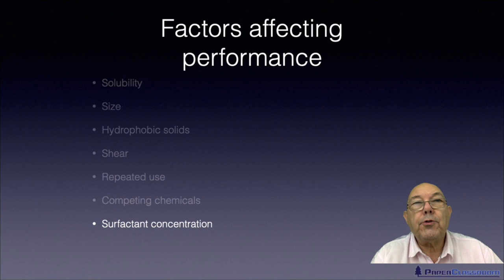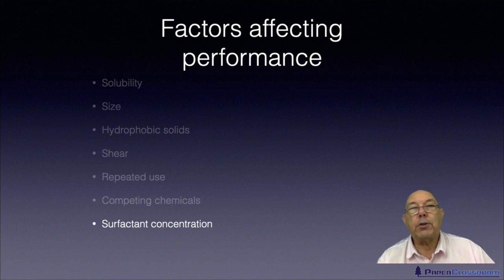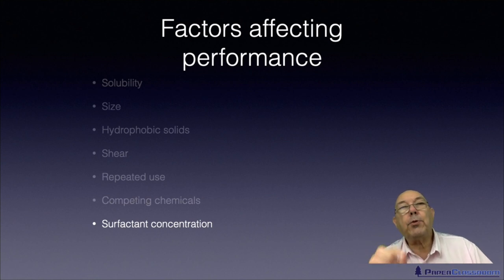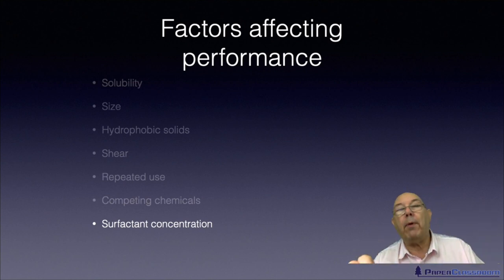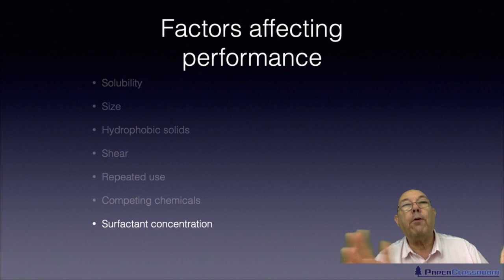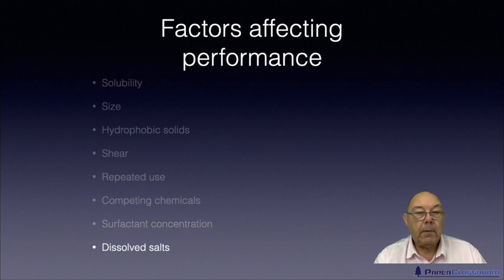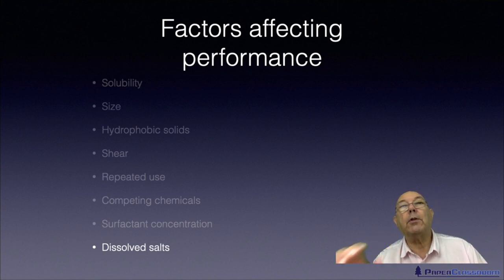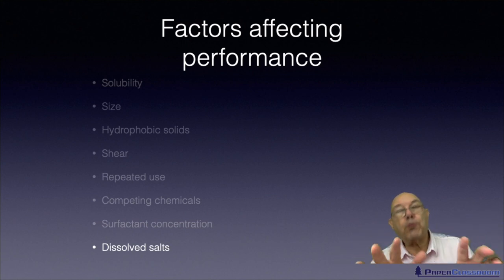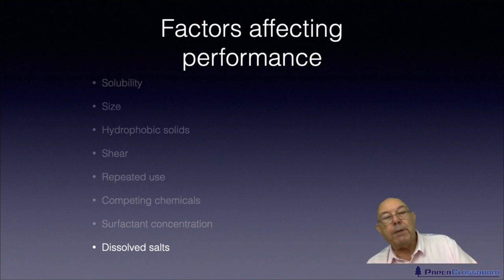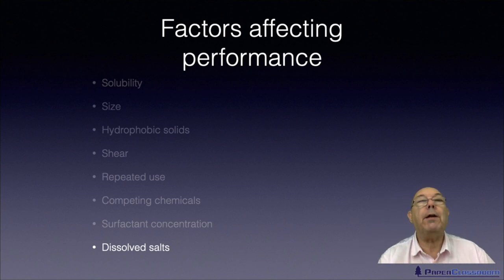And surfactant concentration: these antifoams and defoamers could themselves be called surfactants. And if you put too much surfactant in, then the surfactant itself will become the membrane — and therefore the foam will get worse and worse. So there's a maximum amount of antifoam you can have; put more in and you will create more foam rather than destroy it. Finally, dissolved salts: if you've got quite a lot of dissolved salts in your system, they will actually reinforce the strength of the bubble, making it more difficult for defoamers to penetrate through that membrane.